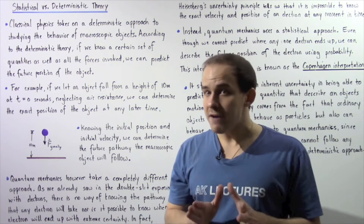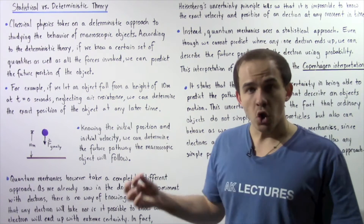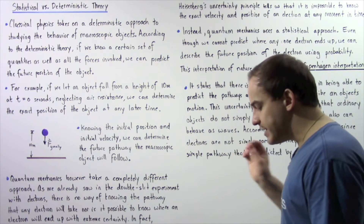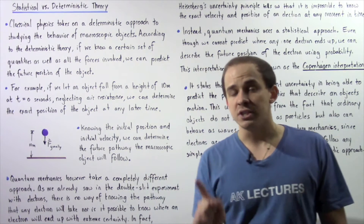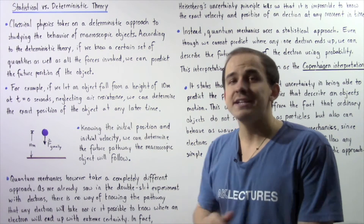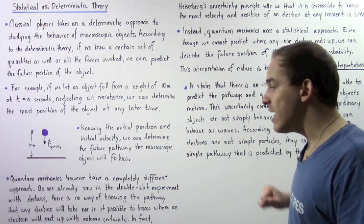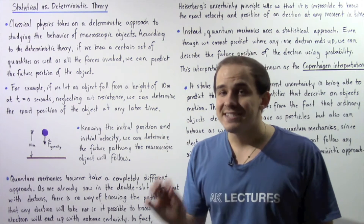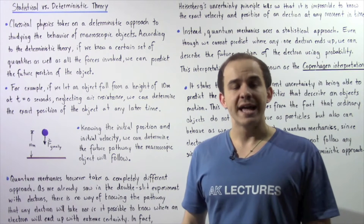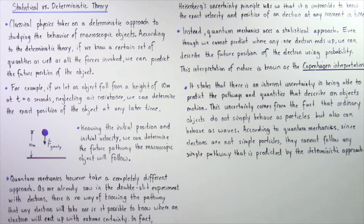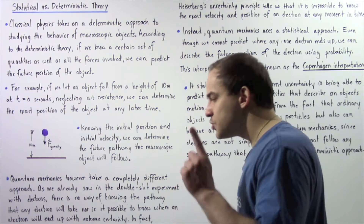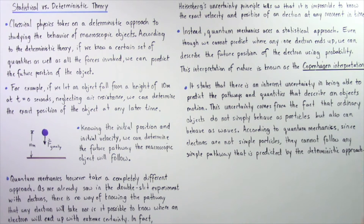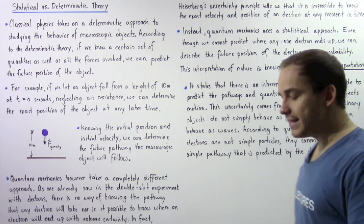Quantum mechanics, however, takes a completely different approach to studying the behavior of macroscopic and microscopic objects. As we already saw in our discussion on the double slit experiment using electrons, there is absolutely no way of knowing the pathway that any one electron will take, nor is it possible to know exactly where that electron will end up. Heisenberg's uncertainty principle tells us that it is impossible to know precisely both the position and the momentum of any electron at any given moment in time.